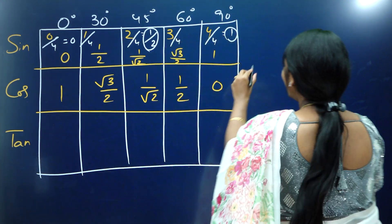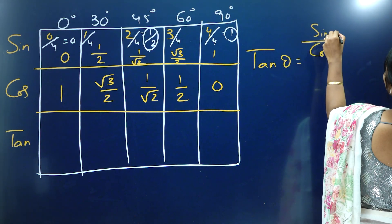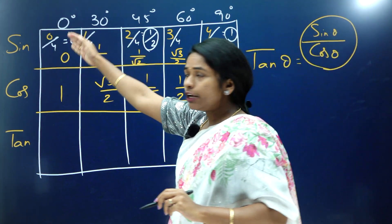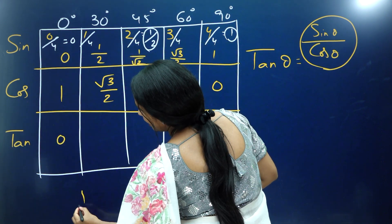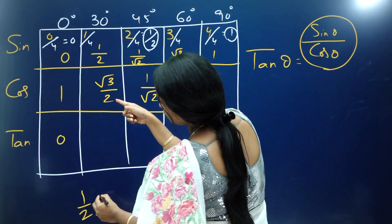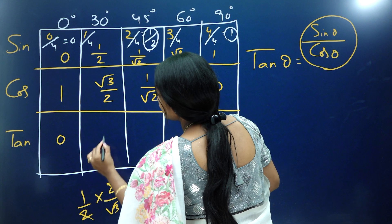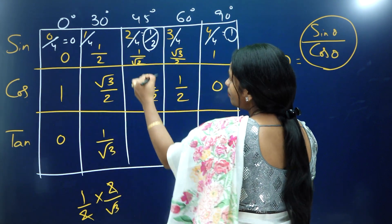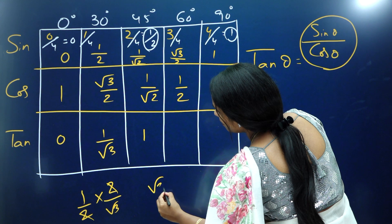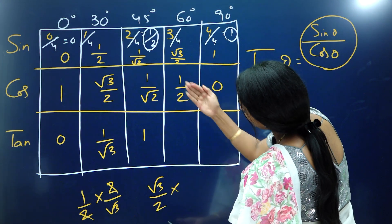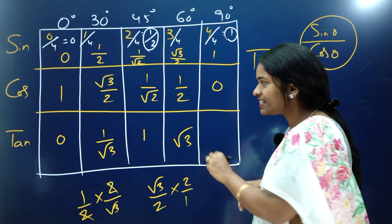How to find tan value? Tan θ = sin θ / cos θ. For 0°: 0/1 = 0. For 30°: (1/2) / (√3/2) — the 2s cancel — giving 1/√3. For 45°: (1/√2) / (1/√2) — they cancel — giving 1. For 60°: (√3/2) / (1/2) — the 2s cancel — giving √3. For 90°: 1/0 = infinity.